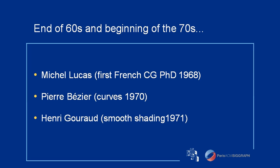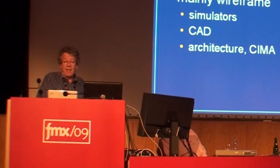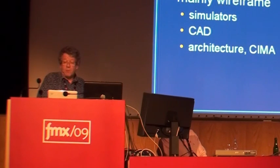Henri Gouraud was the first to use interpolation to render polygonal objects as smooth surfaces. In 1974, a French plotter company, Benson, registered 'infography' as a trademark. Fortunately, they never kept the use of that — it became a common word in French for computer graphics.